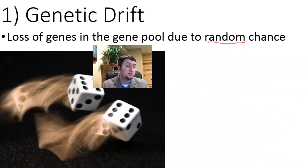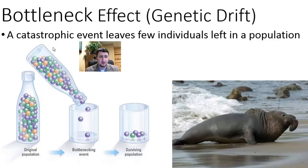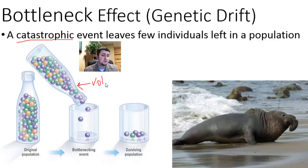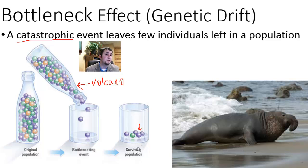Genetic drift can occur in one of two different ways. The first way is called the bottleneck effect, where there is a catastrophic event that leaves only a few individuals left within a population. Let's look at this bottle right here — let's say that this is an original population. We have purple genes, green genes, and yellow genes. When you turn a bottle over, only a small amount falls out. Similarly, a catastrophic event like a volcano can eliminate the majority of all genes in that population, leaving only just a few — maybe some purple ones and one or two green ones. Those select few genes are the only ones available to form a new population.